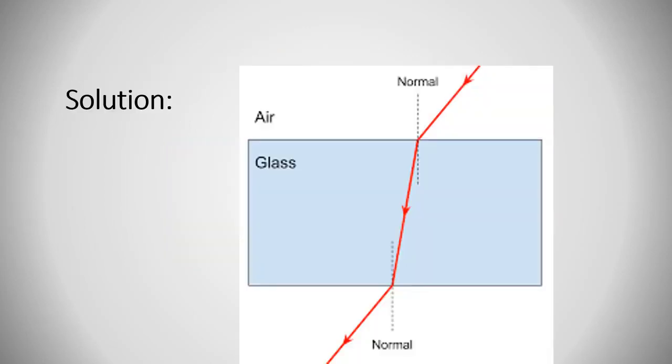That's the solution. Your drawing should be like this. From air to glass, that's the incident ray. We should draw at the point of incidence a normal line, and that's the refracted ray. It should be refracted towards the normal. And in the second boundary, that's the second boundary, the incident ray in the glass, the refracted ray in air, so it will refract away from the normal.